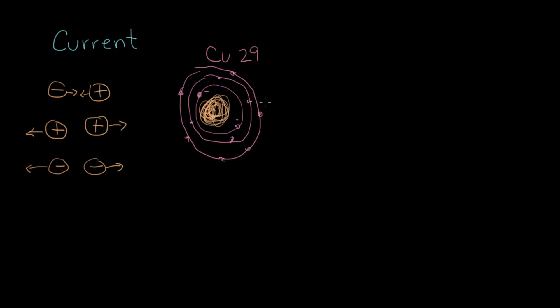It turns out, just as a coincidence for copper, that the last orbital out here has just one electron in it. And that's the one that is the easiest to pull away from copper and have it participate in conduction — in electric current. So every copper atom will have the opportunity to contribute this one lonely outer electron. Silver has this same kind of electron configuration where there's just one out here, and that's why silver and copper are such good conductors.